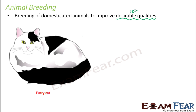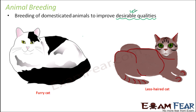As we discussed in the previous lesson about allergies, these furs tend to fall off from the animal's body and can actually cause allergies in human beings. So a furry cat is something which is not very desirable by human beings. More desirable would be a less-haired cat — one which has less hair over its body — so the chances of allergies will also be less. So less-haired is a preferred or desirable quality.